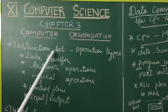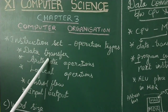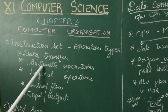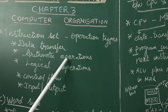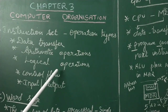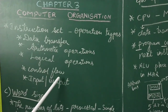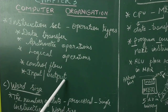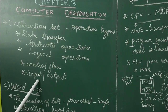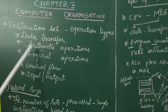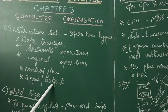The instruction set contains different types of operations: data transfer instructions, arithmetic operations such as addition, subtraction, multiplication, and division, logical operations, control flow for controlling other execution paths, and input-output instructions for handling input and output data.